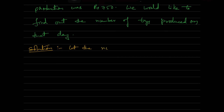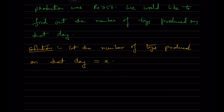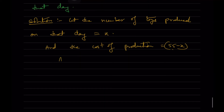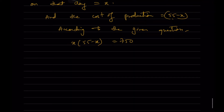Solution: Let the number of toys produced on that day be x. The cost of production of each toy is (55 - x) rupees. According to the question, x(55 - x) = 750, which implies 55x - x² - 750 = 0.